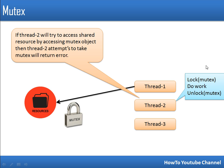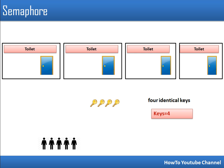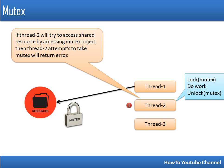Meanwhile, thread two also tries to access the resource and executes the same code — it tries to occupy the mutex object. But that mutex is already held by thread one. The mutex object can be held by only one thread at a time. If another thread tries to occupy it, there will be an error — thread two's attempt will return an error. This is how mutex works: a thread occupies the mutex object to access resources, and once done, it releases it — there is ownership.